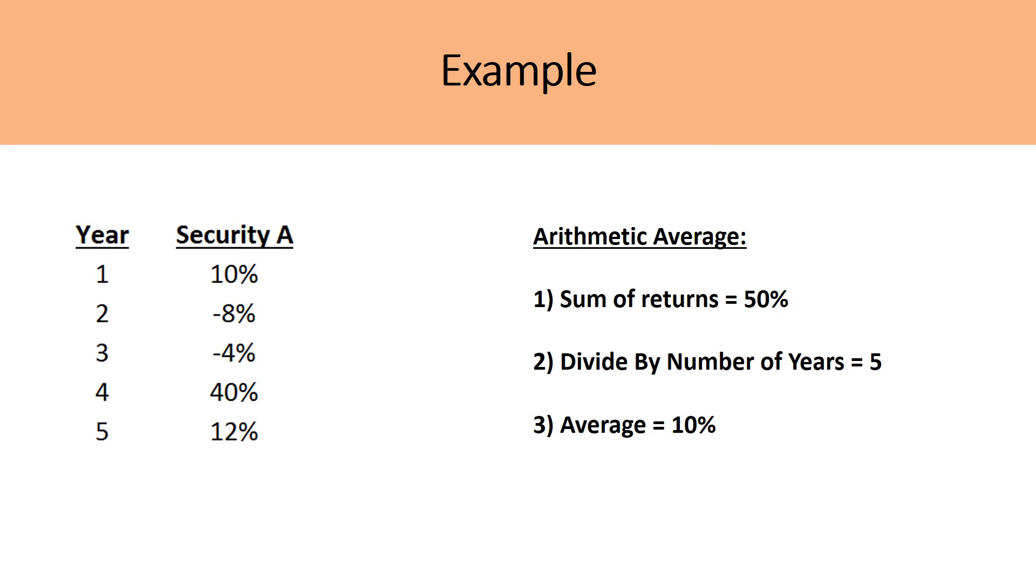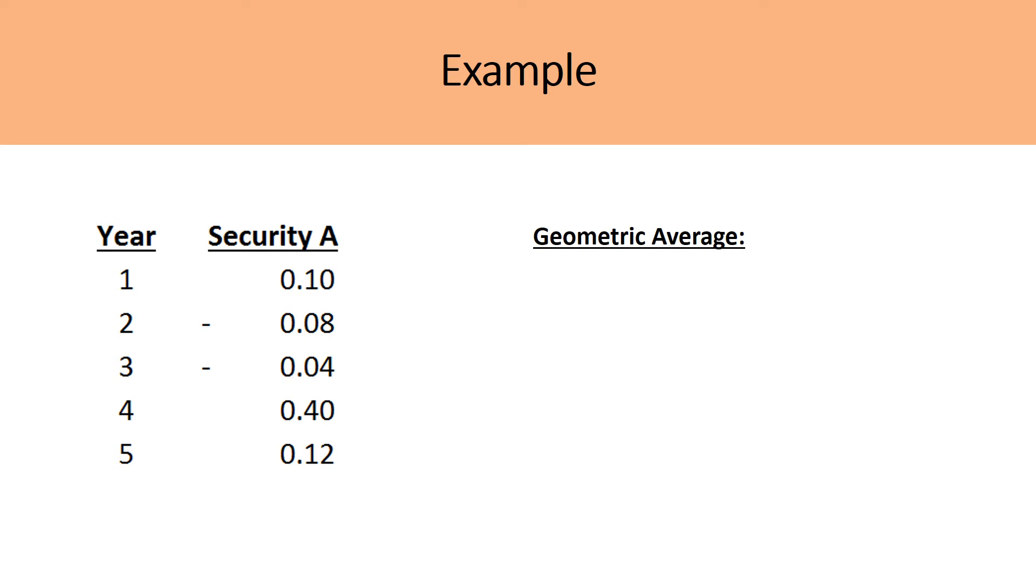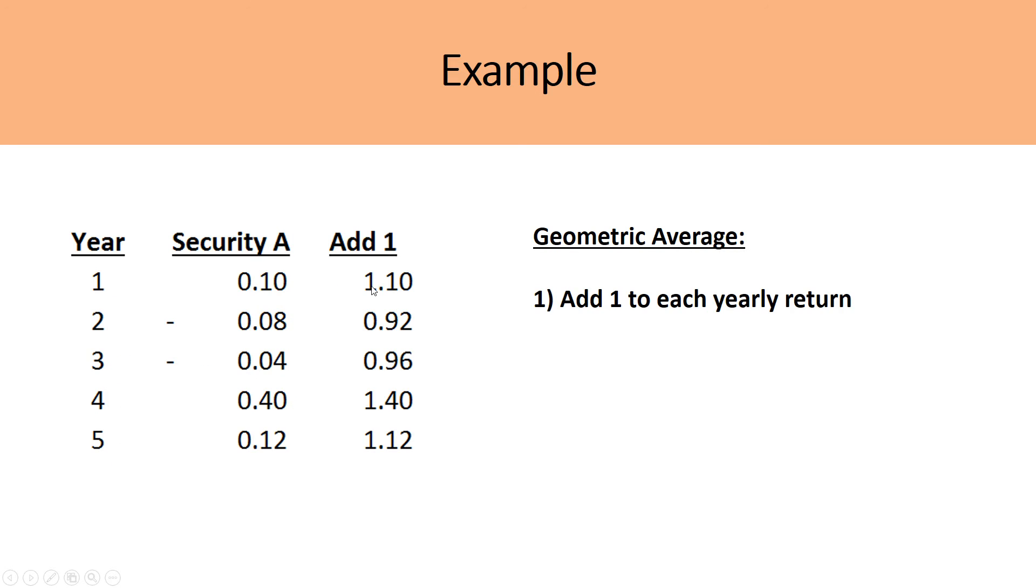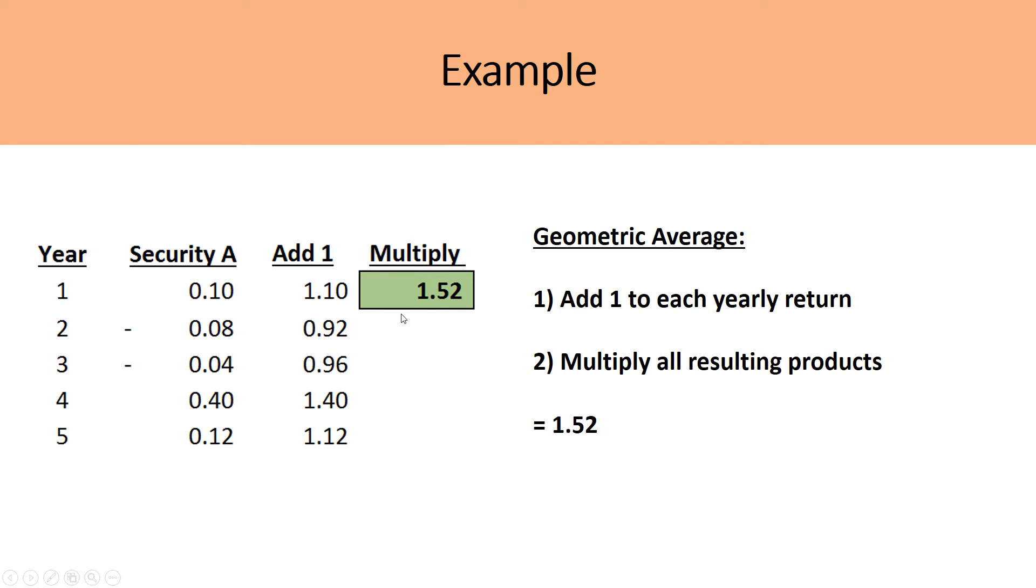The geometric average, on the other hand, requires you to add that one value to each of the returns. And so I've changed the percentage values to decimal values to better illustrate that. So our first step would be to add one to each of these returns. So our first year, the stock was up by 10%, so now it'd be 1.1. Then the next year dropped by 8%, so now it's 0.92 because we add that one. After you have added that one value, you multiply each of these values by each other. So I multiply 1.1 times 0.92 times 0.96 times 1.4 times 1.12 to get a net value of 1.52.